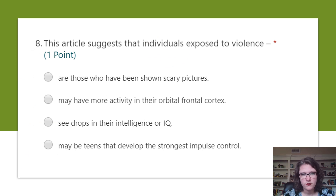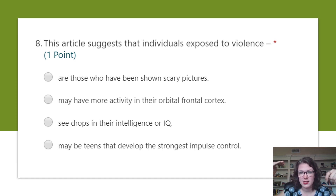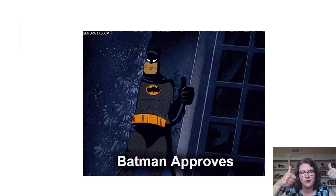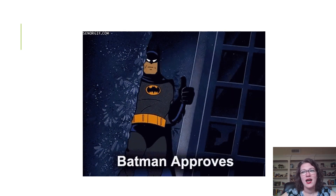The final question asks what the article suggests about individuals exposed to violence. Options: they may have more activity in their orbital frontal cortex; they may see drops in their IQ; or they may be teens that develop the strongest impulse control. There is one sentence in the text that literally tells you this answer — go back and find it. I'll tell you it is not option A. Between B, C, and D, don't guess — go back to the text. Great job today, everyone. I'm so proud of you. I love you, I miss you like crazy, and as always, have a wonderful day!